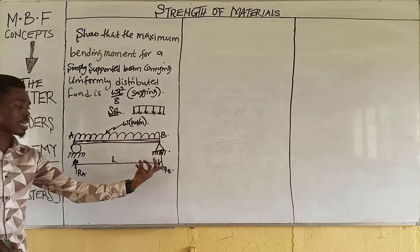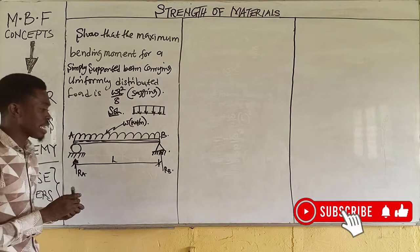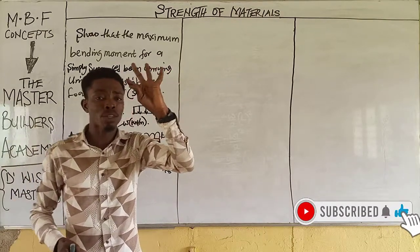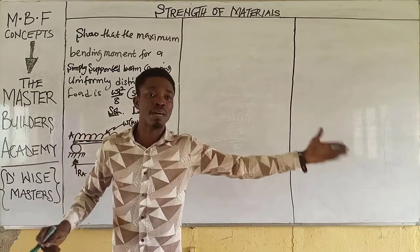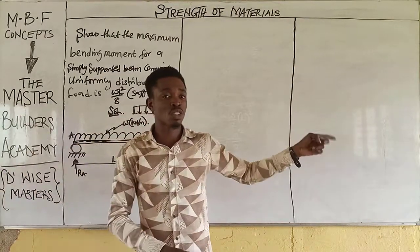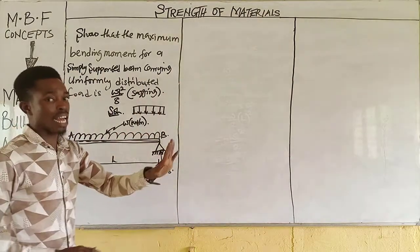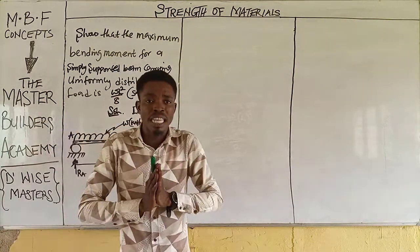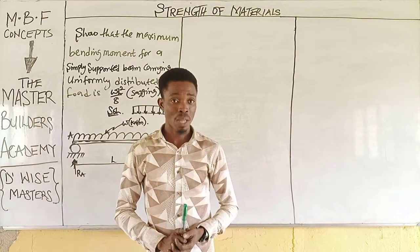A to B is a distance of L, or a span of L. Any time you have a simply supported beam with a uniformly distributed load across the entire span, the reaction at A is equal to the reaction at B, because the load is symmetrical to the system.